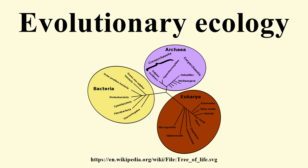A large part of evolutionary ecology is about utilizing models and finding empirical data as proof. Examples include the Lack clutch size model devised by David Black, the 1968 model on the specialization of species by Richard Levins, and Lauren Dijkman's models on mutualisms.